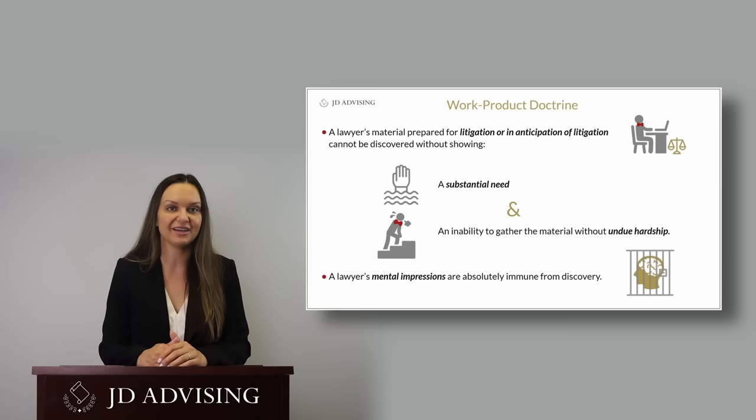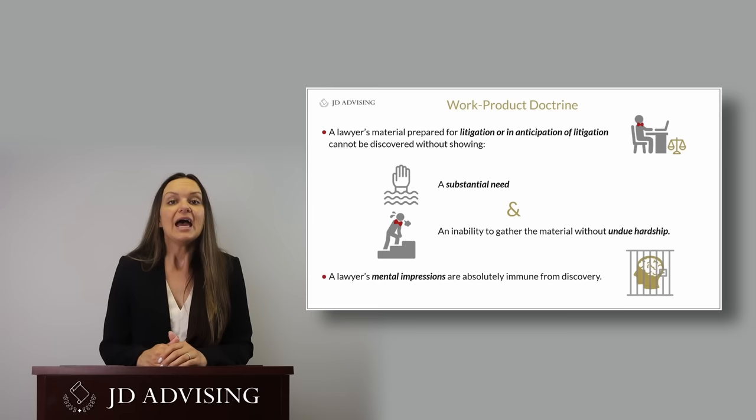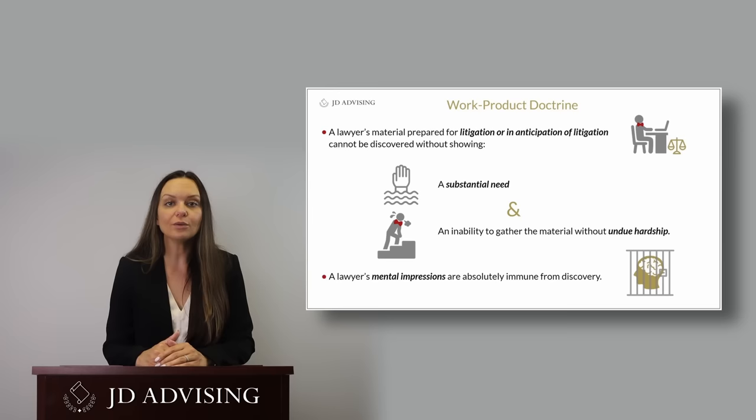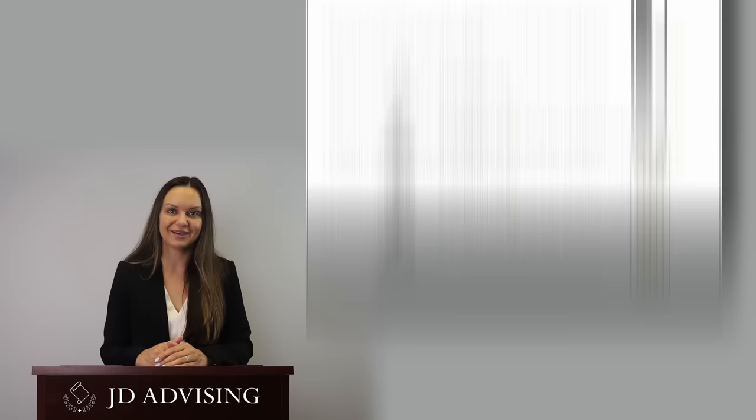The work product doctrine is defined as materials prepared by a lawyer for litigation or in anticipation of litigation. It is immune or protected from discovery, unless the opposing party can show a substantial need and undue hardship. However, a lawyer's mental impressions are absolutely immune — even if the opposing party can show substantial need and undue hardship, the lawyer's mental impressions will always be protected and redacted from whatever is produced.